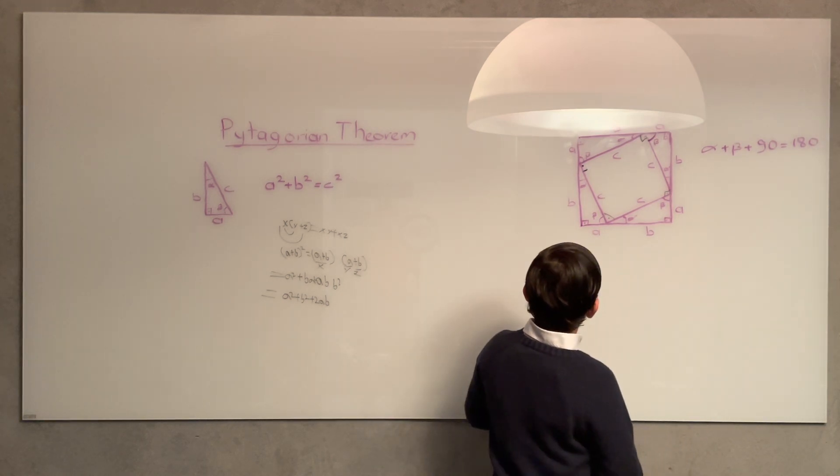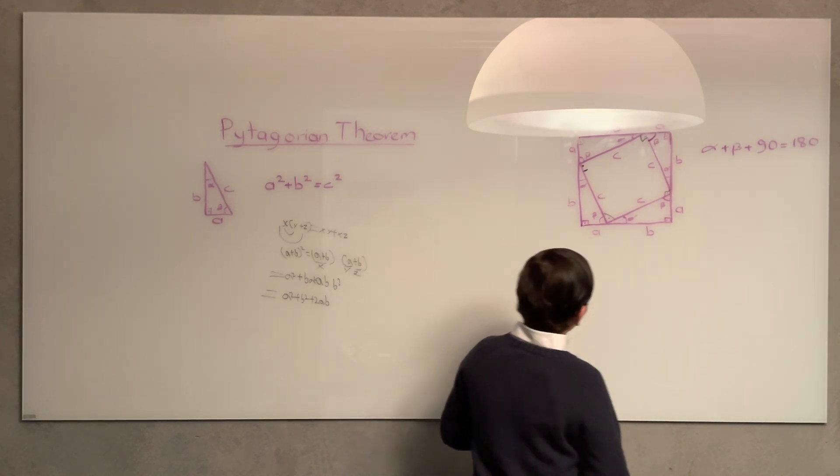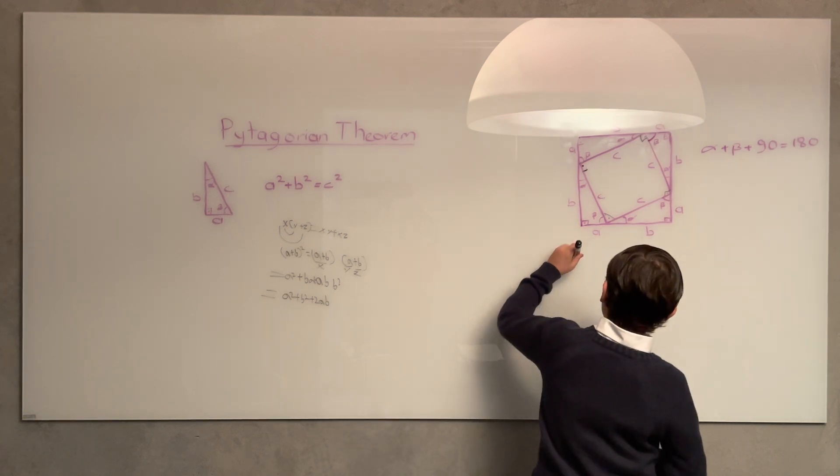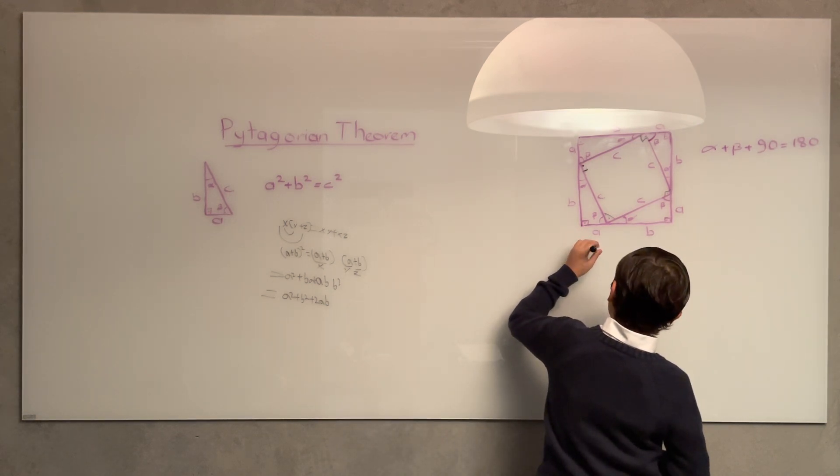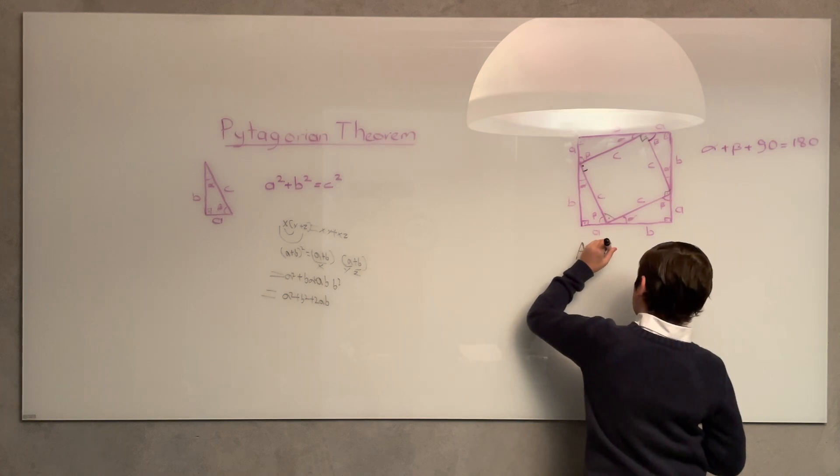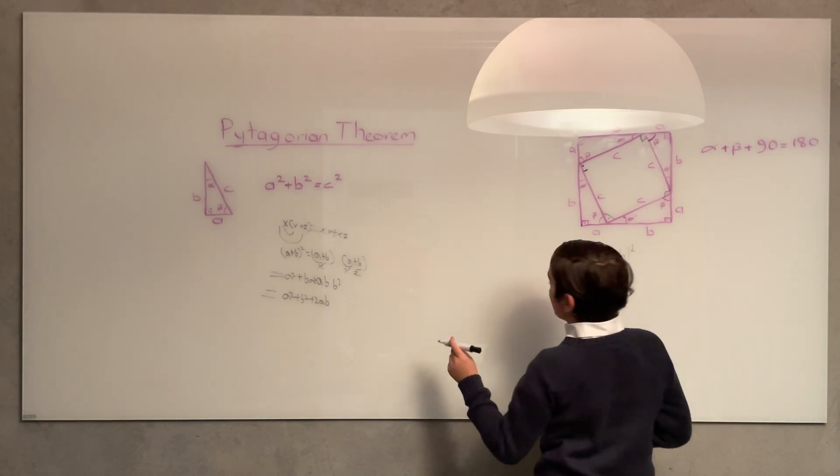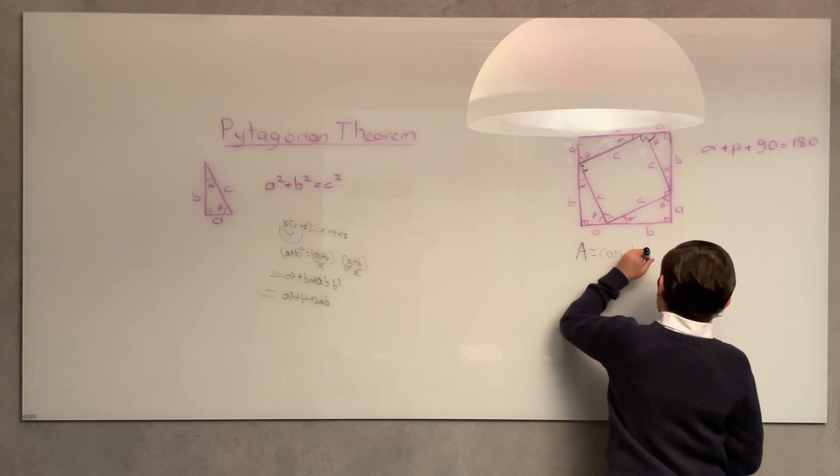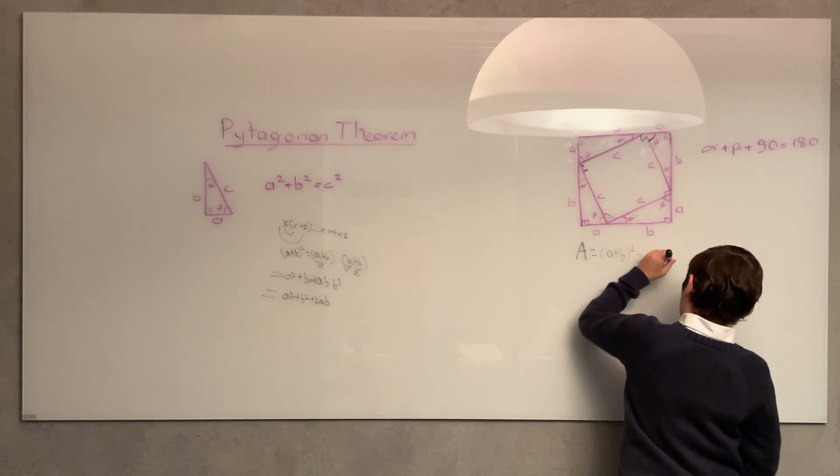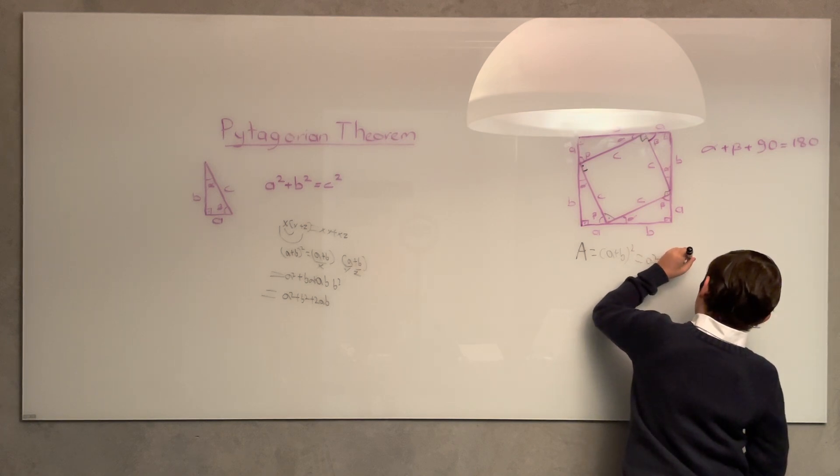Now, the area of the big square is (a + b)². We know from earlier, (a + b)² equals a² + b² + 2ab.